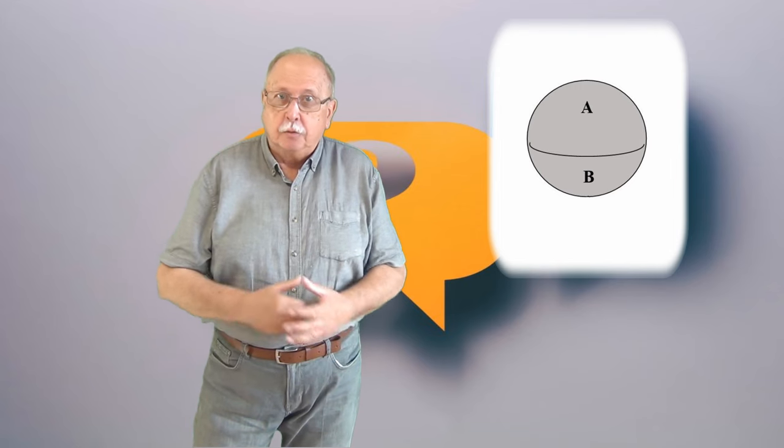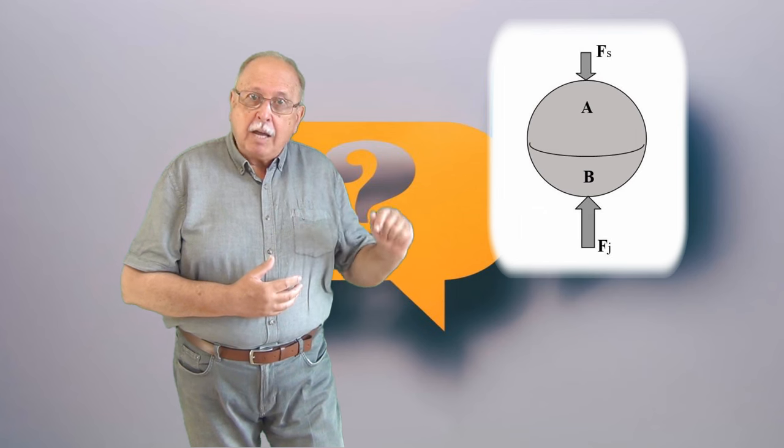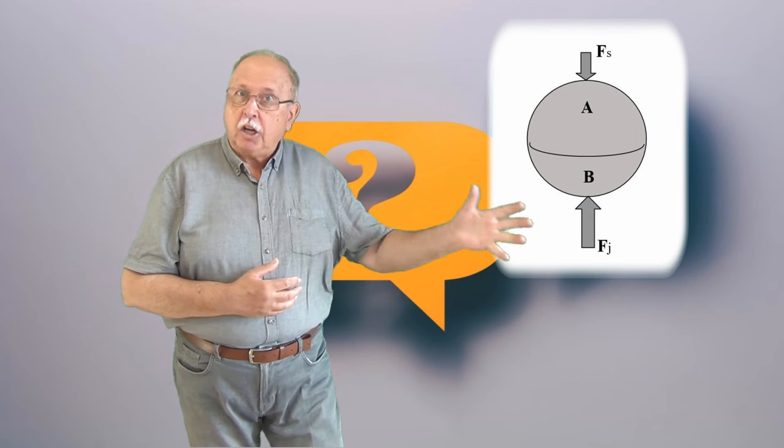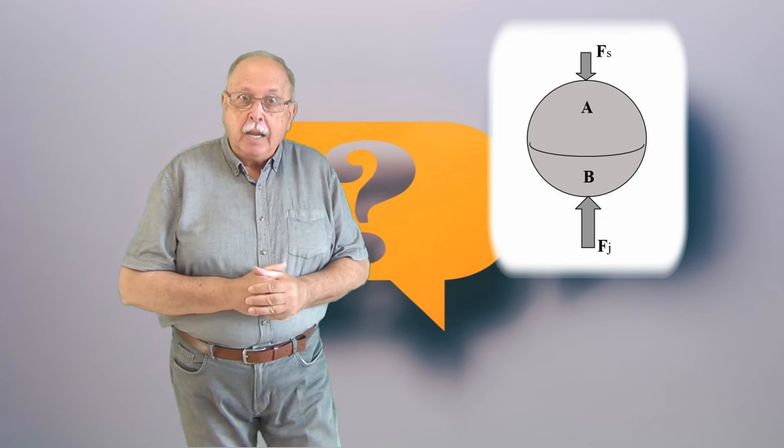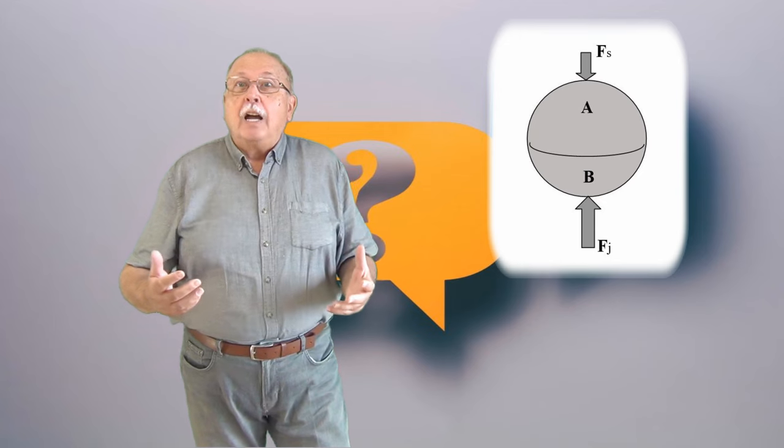Pur și simplu pentru că jumătatea de jos este mai jos, este mai adânc în fluid. Și datorită acestui fapt, forța de presiune care împinge corpul nostru în sus este mai mare decât forța de presiune care îl împinge în jos, așa cum vedeți în desen. Iar diferența dintre aceste două forțe este forța arhimedică.